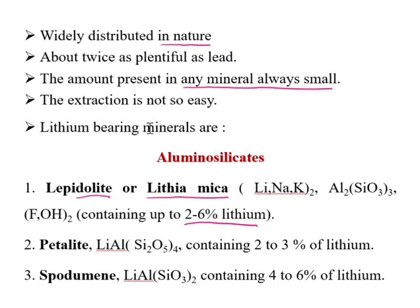The lithium-bearing minerals, known as ores, are used for the extraction of lithium. There are two types of lithium ores: aluminosilicates and phosphates. Among the aluminosilicates, the first is lepidolite — also known as lithium mica — which contains about two to six percent lithium. The second aluminosilicate ore is petalite, containing around two to three percent lithium.